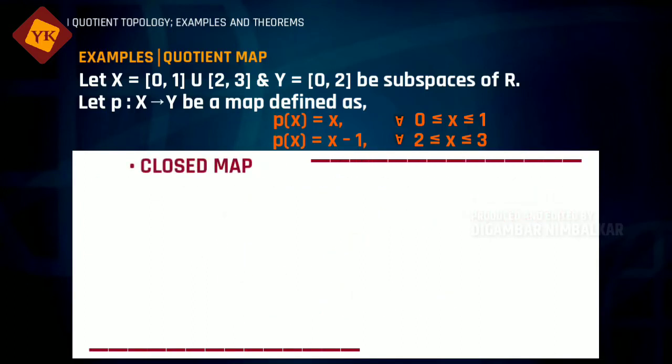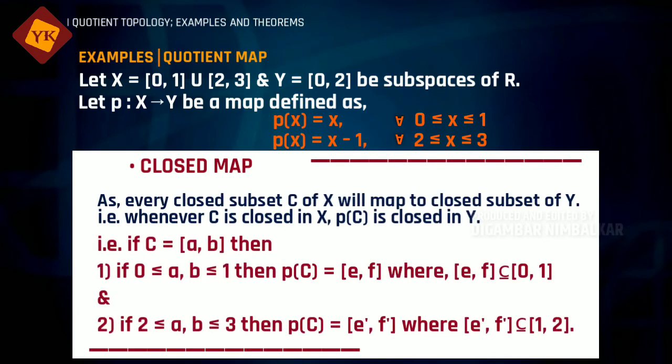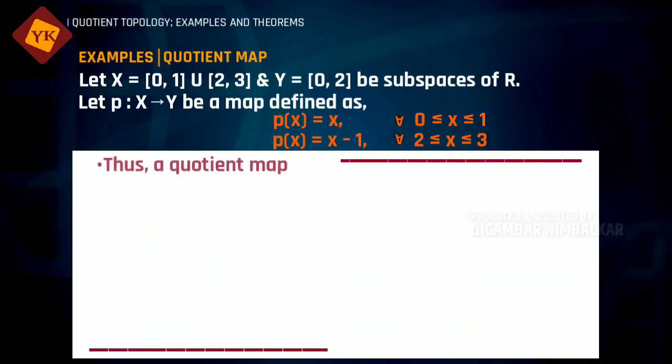And this map p is closed too, because if we consider any closed set in X, then it will surely map to some closed set in Y. And so this map is a quotient map.